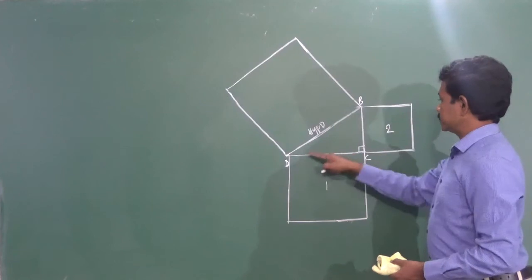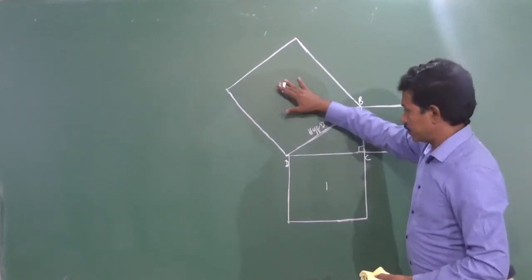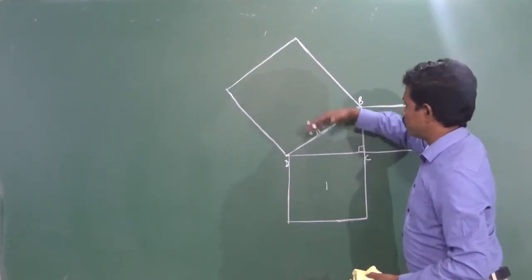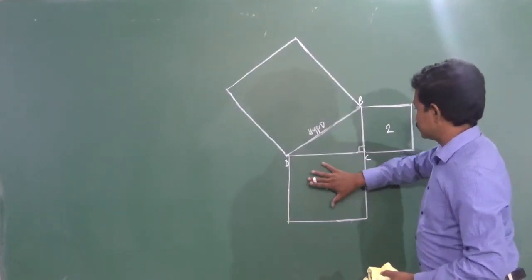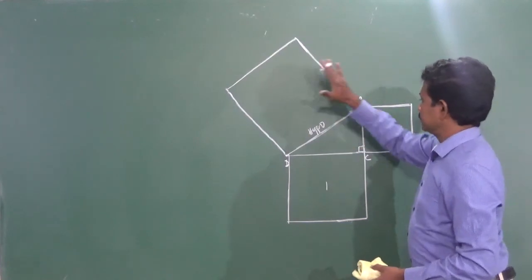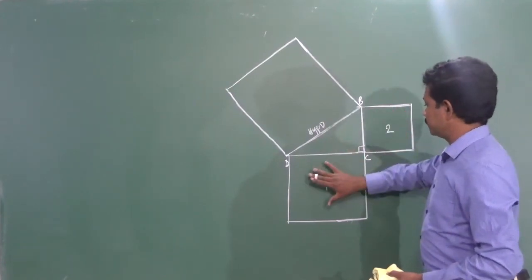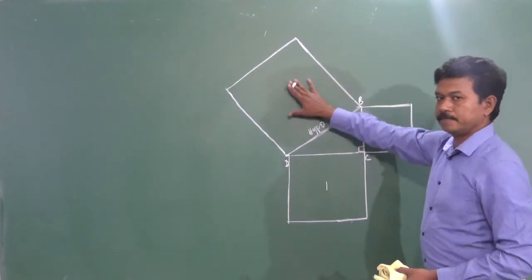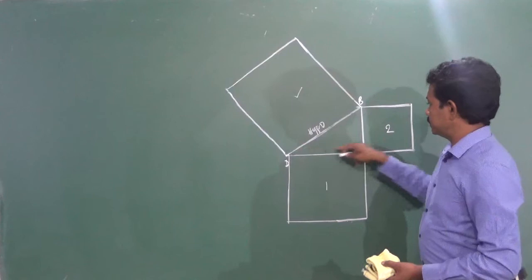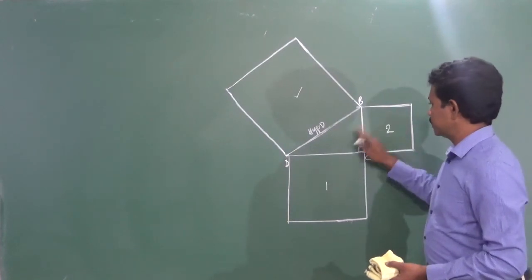In a right-angled triangle, the square on the hypotenuse is equal to the sum of the squares on the other two sides. The area of the square built on the hypotenuse equals the sum of the areas of the squares built on the other two sides — that is, area of this square plus area of this square equals area of the square on the hypotenuse. This is the exact meaning of the Pythagoras theorem.